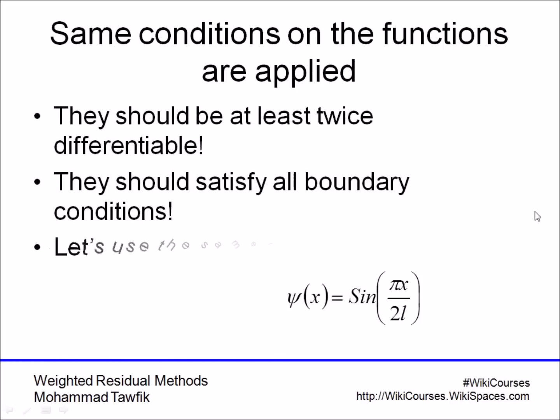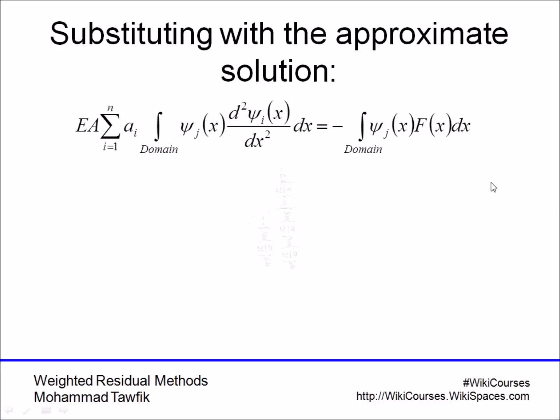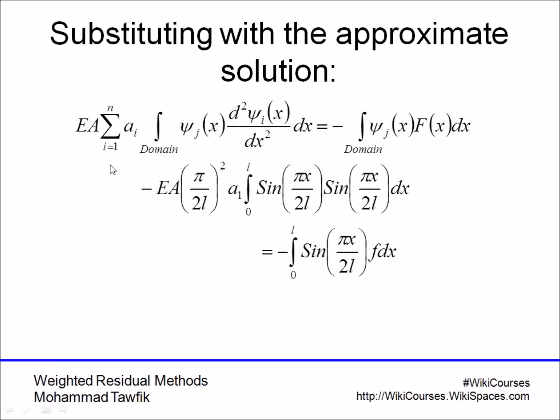Using the single-term problem that we used before in collocation and subdomain, we will introduce the Galerkin method. Remember that sin(πx/2l) satisfies all boundary conditions, and it also satisfies the differentiation requirement. Plugging the sine into the integral, you'll find here that you'll end up with sin(πx/2l) times sin(πx/2l), because the second derivative of the sine is the sine, equal to minus the integration of sin(πx/2l) times f, where f is a constant. Performing this integration, you will end up with a equals 0.52 fl² over EA.